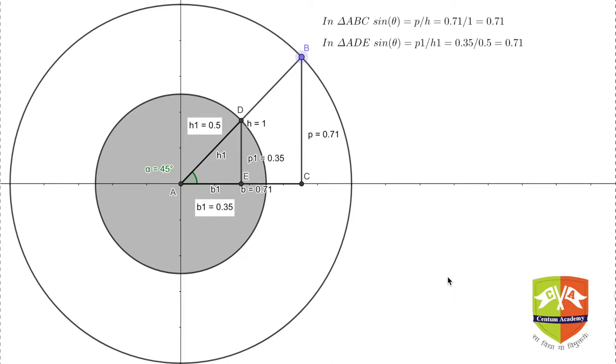So far the theta is constant or the angle is constant, the trigonometric ratios are not going to vary. They are not going to be dependent on the length of the sides of the triangle.